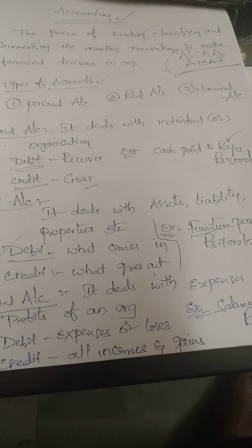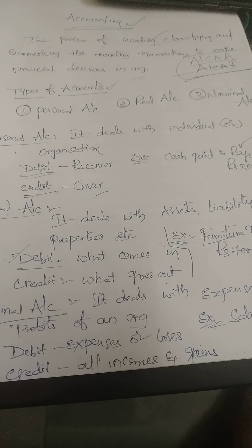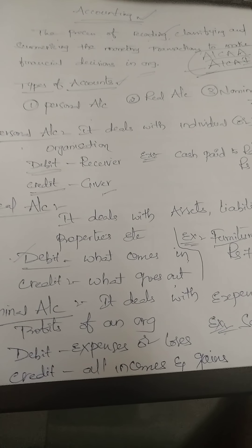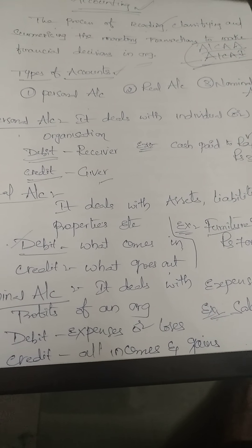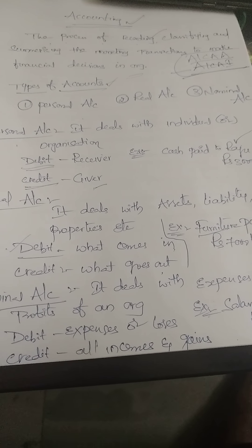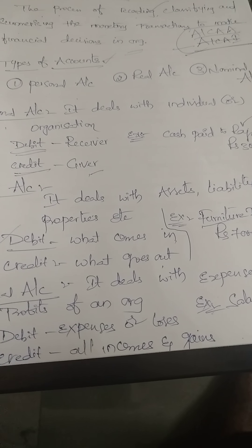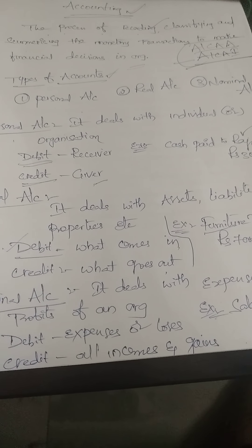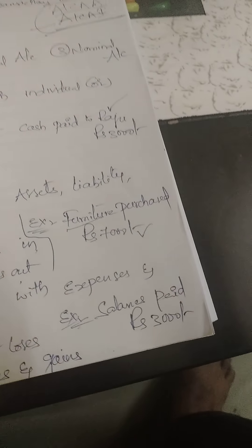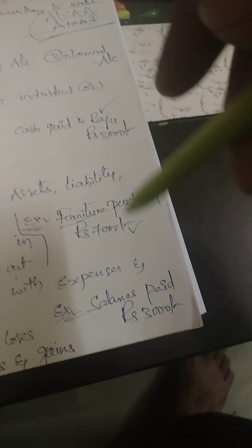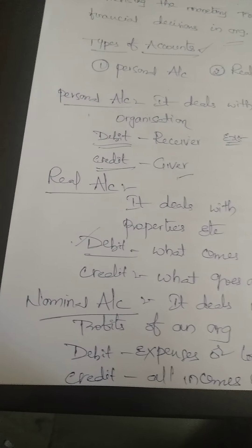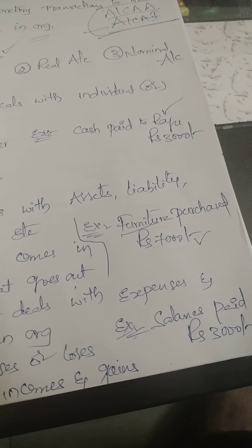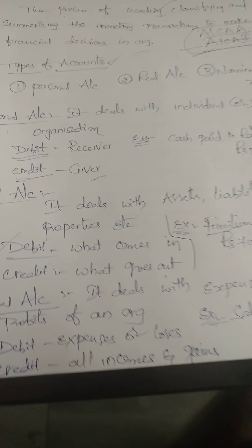The third type is nominal account, which deals with all expenses, profits, and losses of the organization. These are completely current or temporary transactions done by the company. Under nominal account, debit is all expenses and losses, and credit is all incomes and gains. For example, salaries paid — salary is an expense, recorded under debit. Interest received or commission received is income, so it is recorded under the credit side.